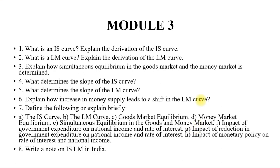Next, Module 3: What is the IS curve? Explain the derivation of the IS curve. What is the LM curve? Explain the derivation of the LM curve. Explain how simultaneous equilibrium in the goods market and money market is determined — that is the equilibrium of the IS-LM curve. What determines the slope of the IS curve? What determines the slope of the LM curve? That is essentially the same as the derivation question, just asked in a different way.